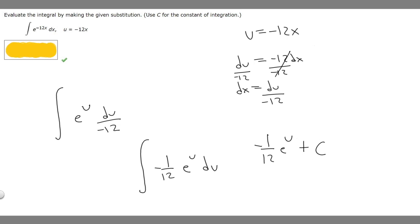And now that you got it like this, all you got to do is replace u with what u equals. And they tell us what it equals, it's minus 12x. So the final answer to this is just going to be minus 1 over 12 times e, then we replace u with minus 12x, then we got to add the constant. So this is going to be your final answer.